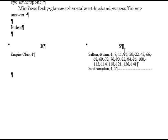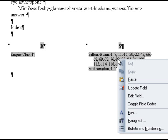Then you'll see the index in your manuscript. If you need to continue adding entries to your manuscript, you can update the index by clicking on it. When you click, you should see the index turn gray. Once it is gray, right-click with your mouse and select Update Field.